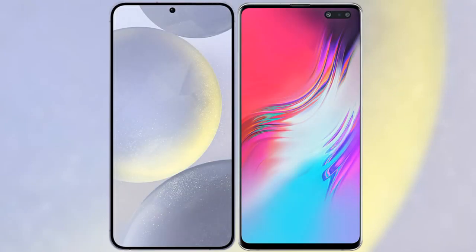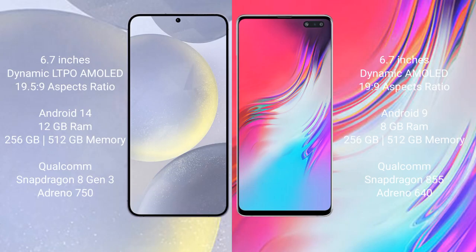I will compare the new Samsung Galaxy S24 Plus with Samsung Galaxy S10. Samsung Galaxy S24 Plus comes with 6.7 inches dynamic LTPO AMOLED display and aspect ratio 19.5:9. Samsung Galaxy S10 comes with 6.7 inches dynamic AMOLED display and aspect ratio 19:9.